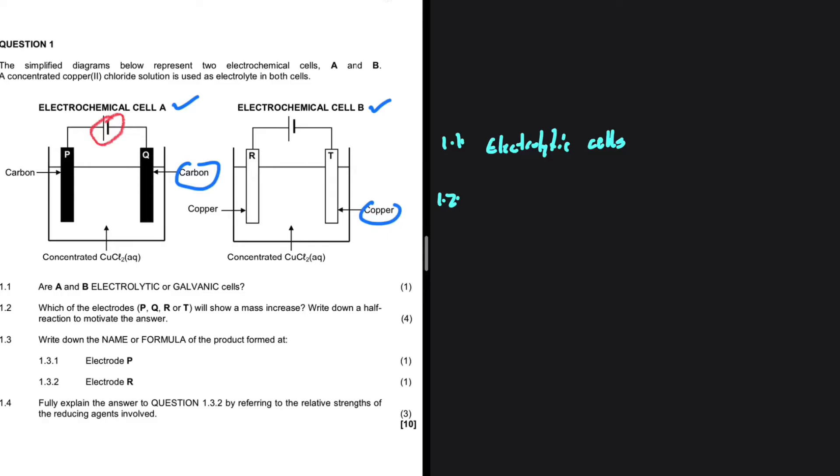In both galvanic and electrolytic cells, we see a mass increase at the cathode. The only difference is that in a galvanic cell, the cathode is positive, while in an electrolytic cell, the cathode is negative. If you look at electrochemical cell A, Q is the negative electrode and T is the negative electrode. So that is where we expect to see a mass increase. So the answer here is Q and T.